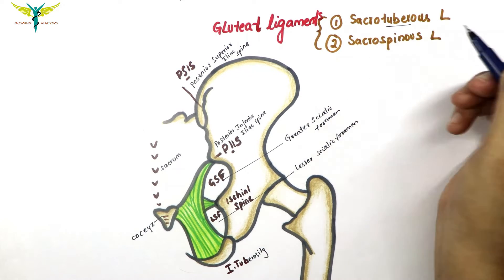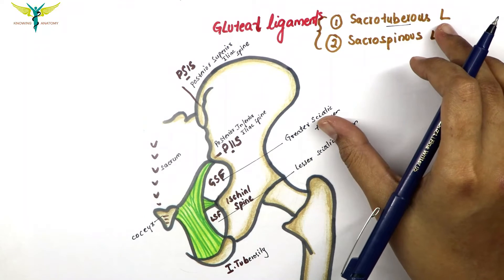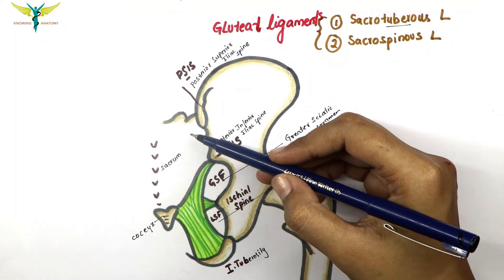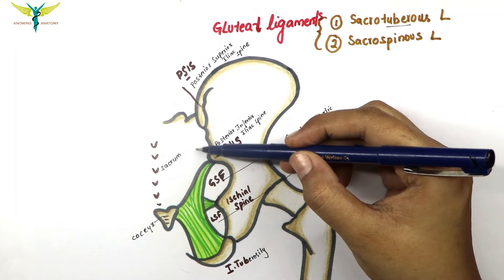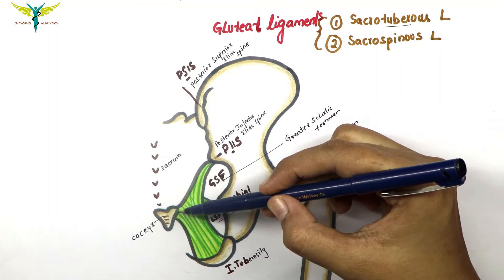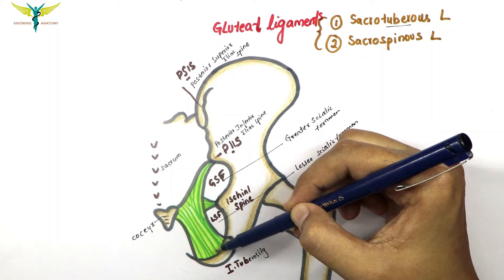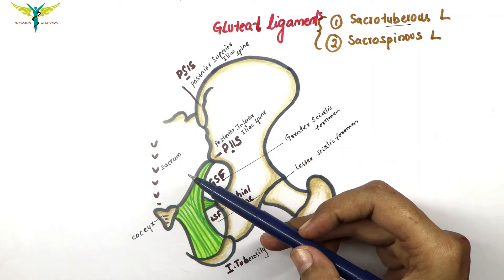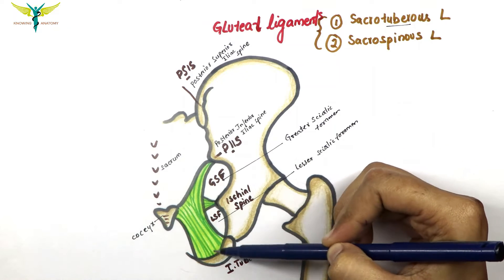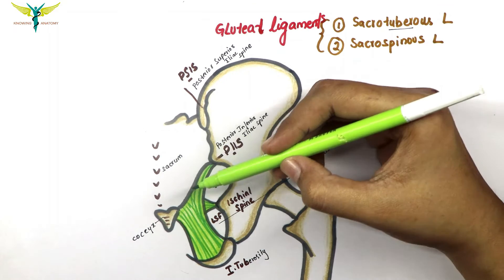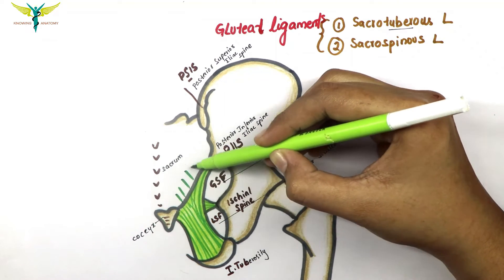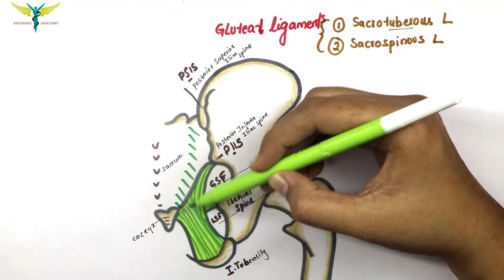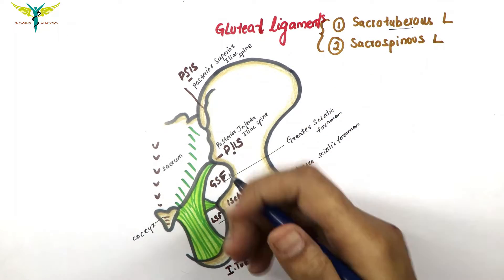Let's talk about the first ligament: the sacrotuberous ligament. As the name indicates, it starts from the sacrum — that is, from the sides of the sacrum and the coccyx — and it attaches to the ischial tuberosity. The name indicates sacrotuberous: sacro referring to the sacrum, and tuberous referring to the tuberosity.